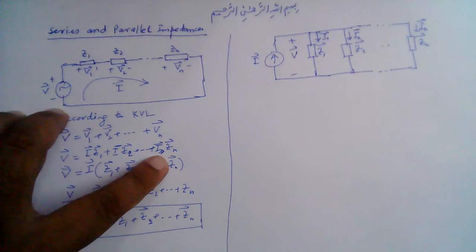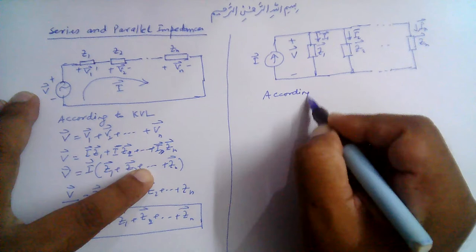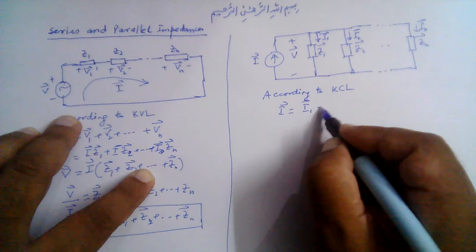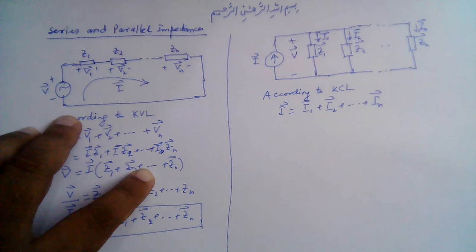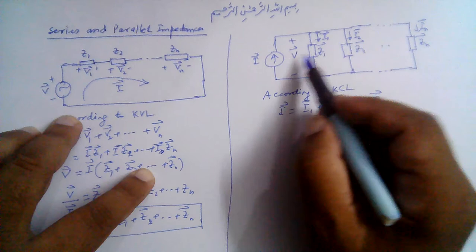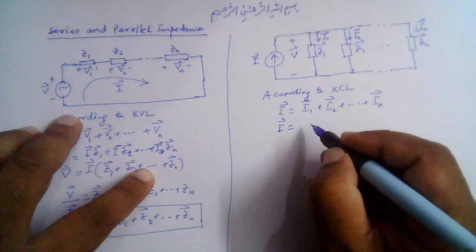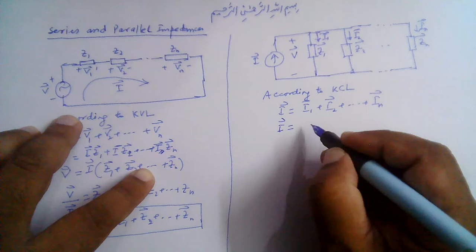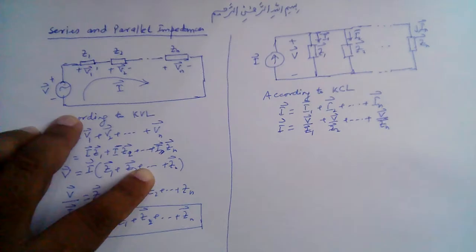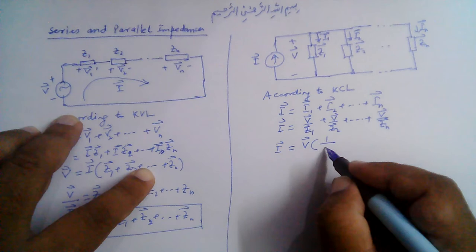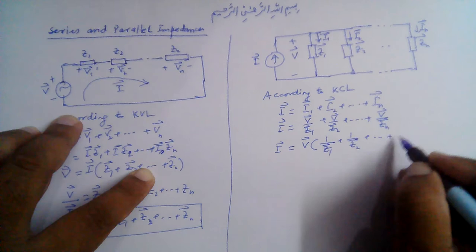According to Kirchhoff's Current Law, the total current i equals i1 plus i2 plus in. Now i1 is given by v divided by z1, i2 is given by v divided by z2, and in is given by v divided by zn. Factoring out v, we get i equals v times (1/z1 plus 1/z2 and so on till 1/zn).